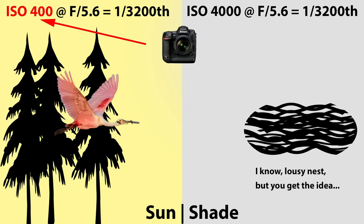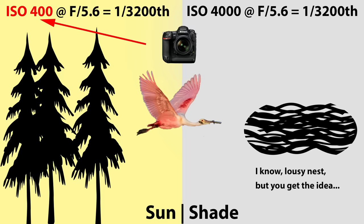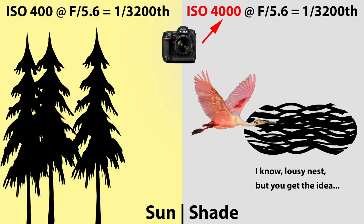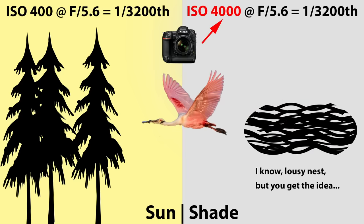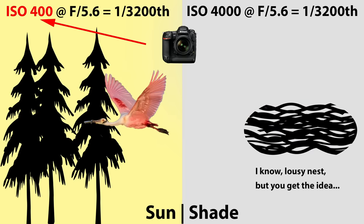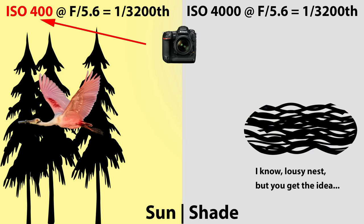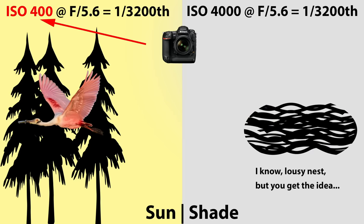When Auto ISO is enabled, the camera can choose a higher ISO when the bird flies into the shade and drop the ISO again when he goes out into the sun, all while maintaining the shutter speed you desire. Let's break out the camera and talk about setting this up. Note that your options may vary a little, but the information you're about to see will apply to most Nikons.